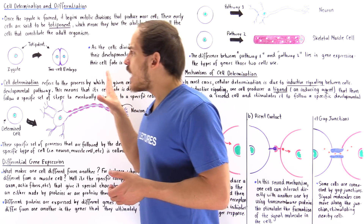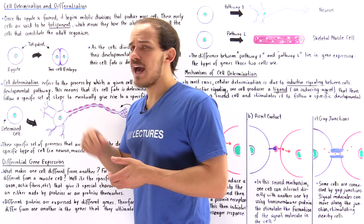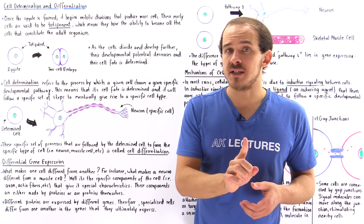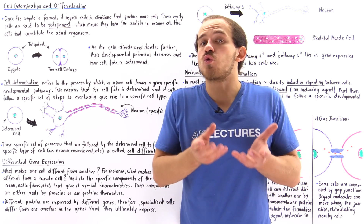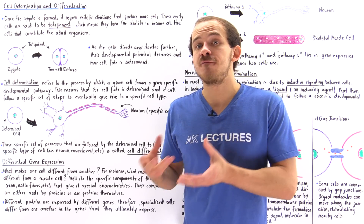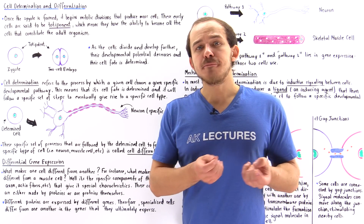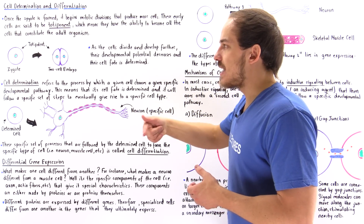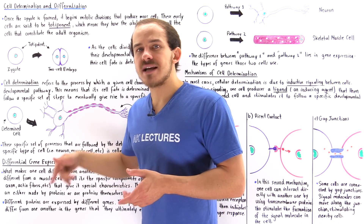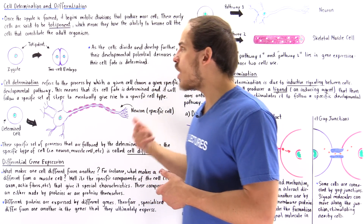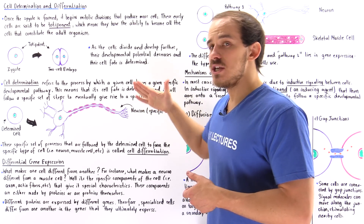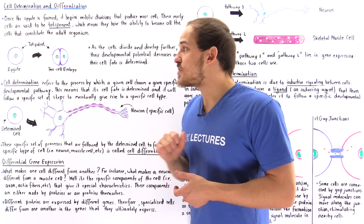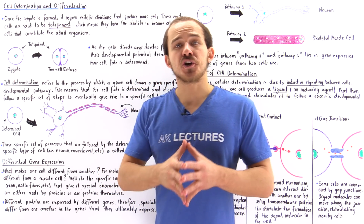In the stage of the zygote and the two-cell embryo stage, these cells are said to be totipotent. What that means is they have a great deal of potential and they can form any and all the cells that make up the adult human organism. Now, as the process of development continues and the cells continue to divide and grow, their potential decreases and eventually their cell fate becomes determined. This process is known as cell determination.